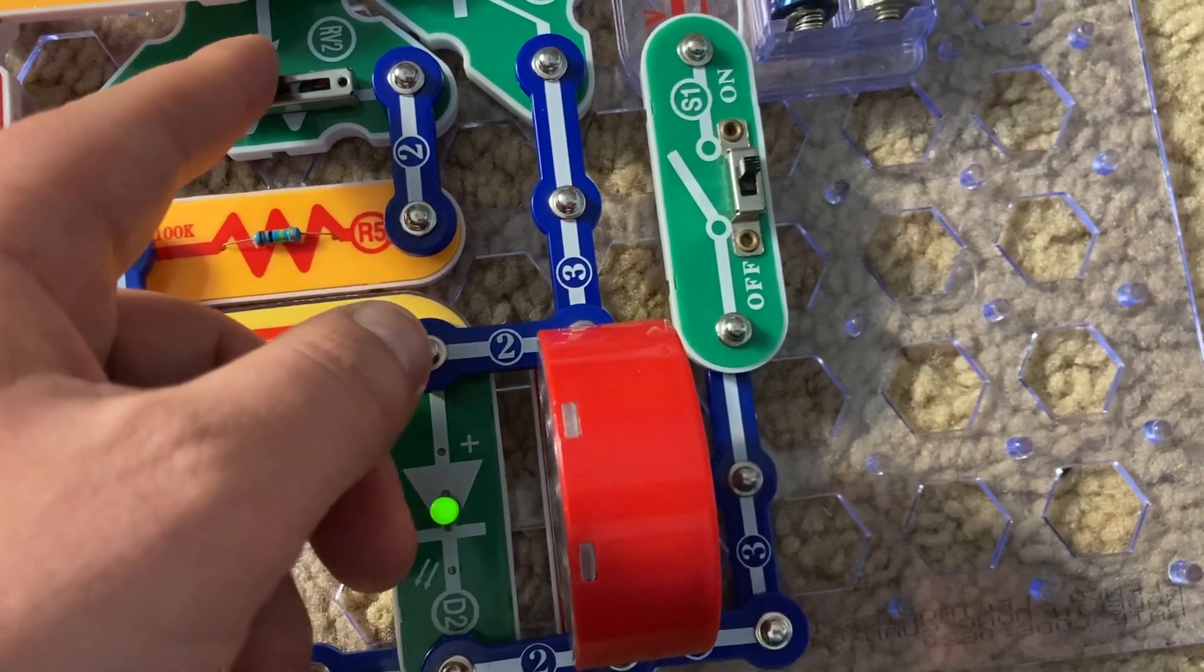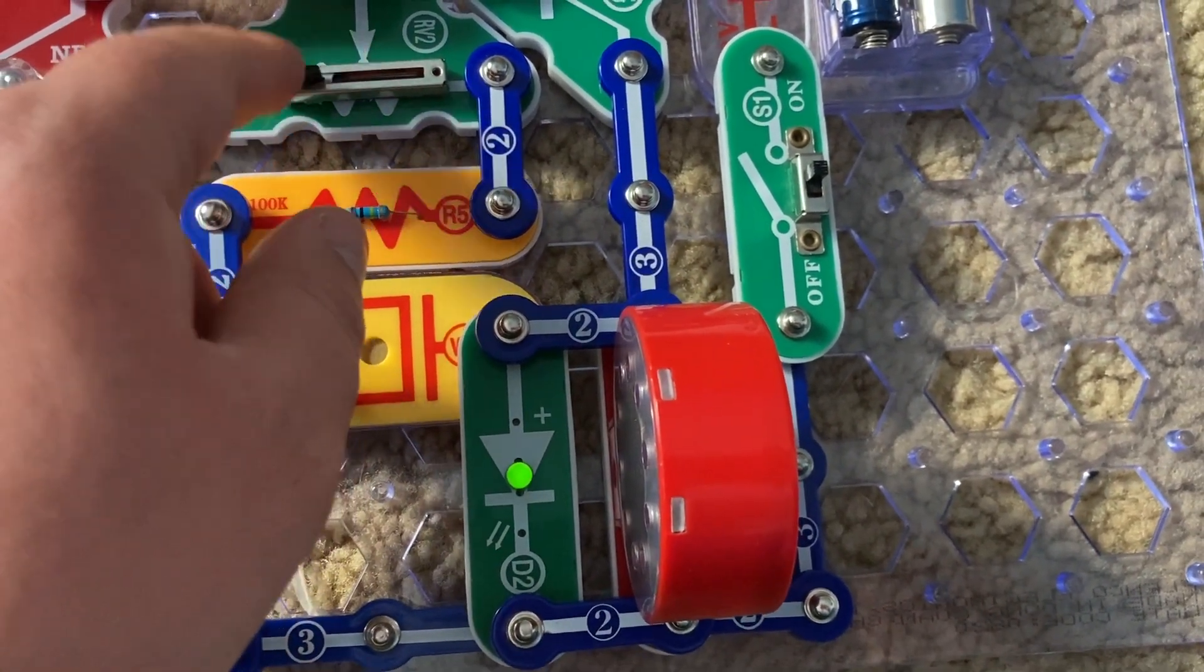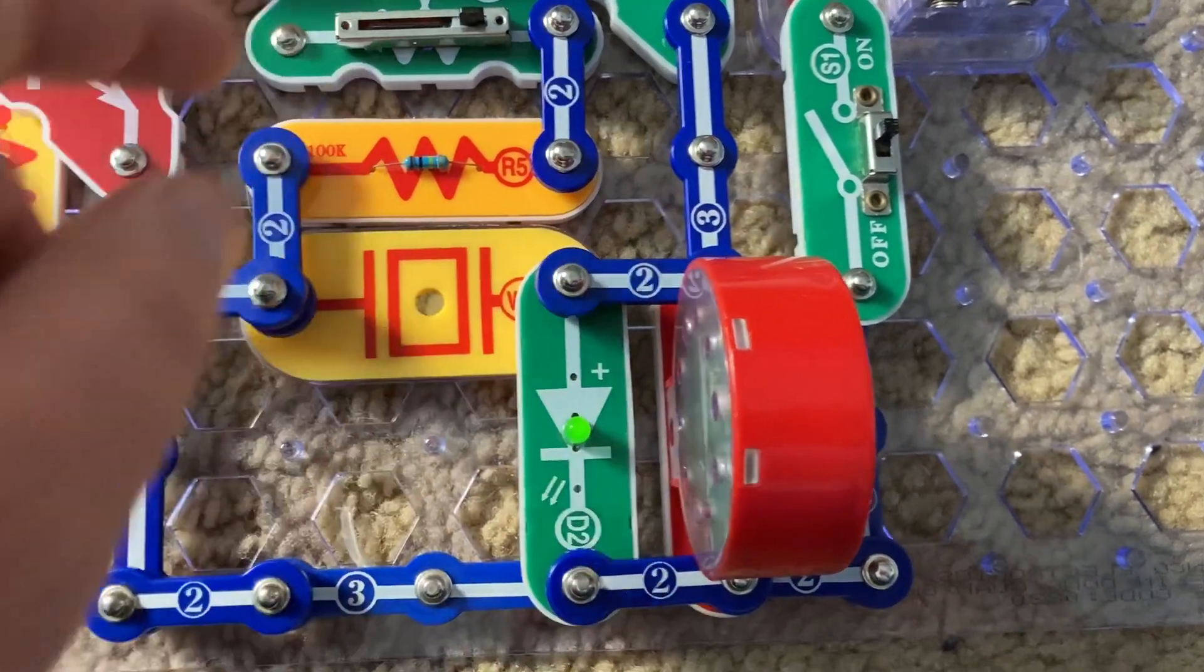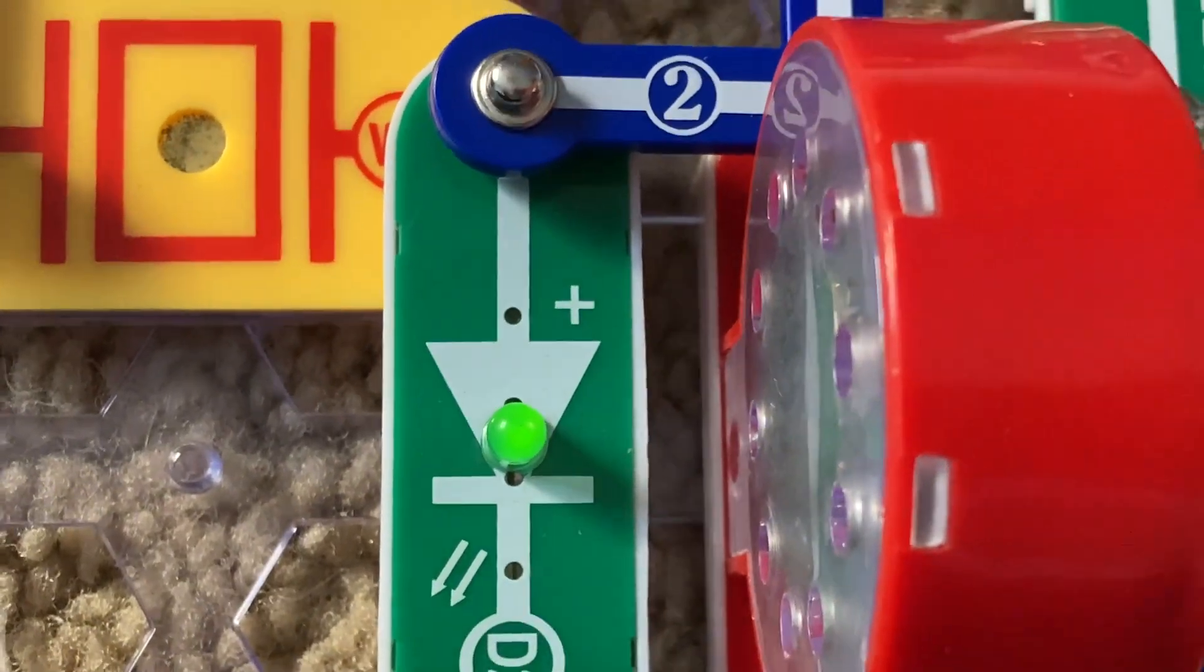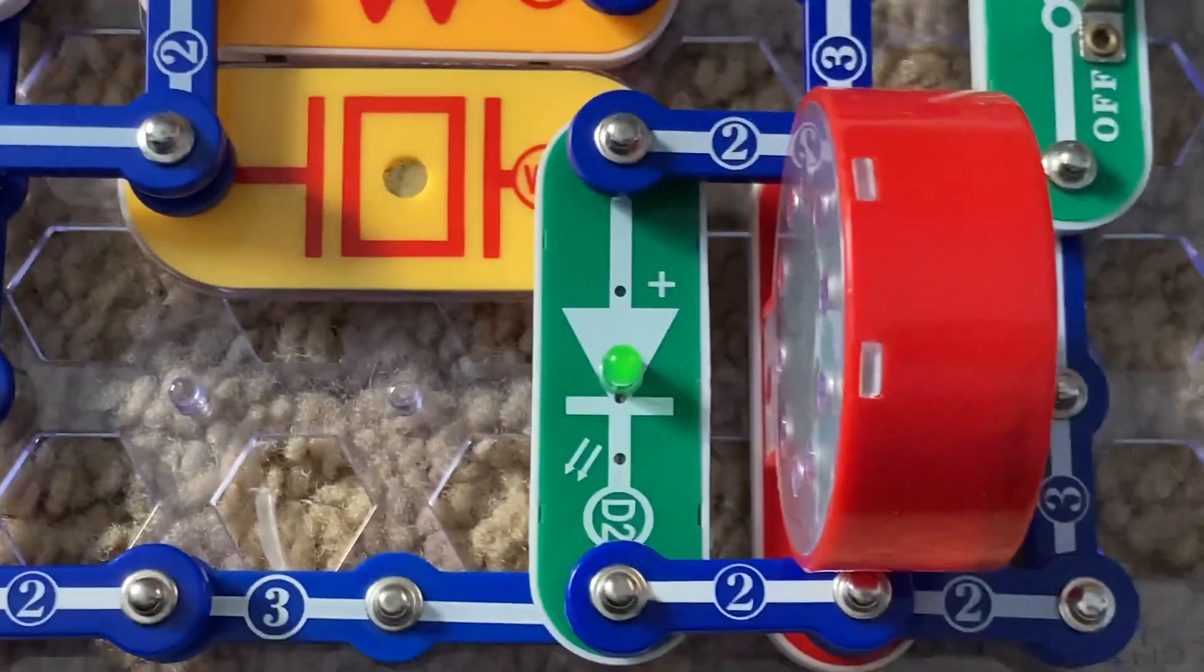You can move the lever on the adjustable resistor to change the pitch. And while the LED appears to be on continuously, it's actually blinking at a very, very high rate.